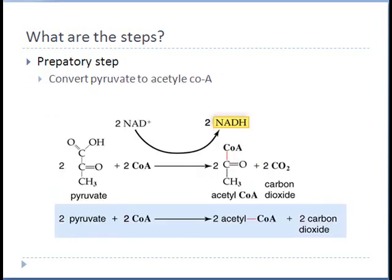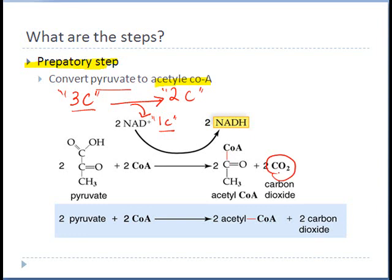Finally, before pyruvate can enter the Krebs cycle it needs to be converted into another molecule which is called acetyl-CoA. Acetyl-CoA is a two carbon molecule and pyruvate if you recall was a three carbon molecule. So if a three carbon molecule converts into a two carbon molecule it must release one carbon out because you can't just magically disappear an element. This carbon that comes out eventually comes out as carbon dioxide.